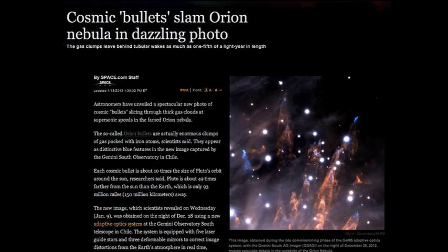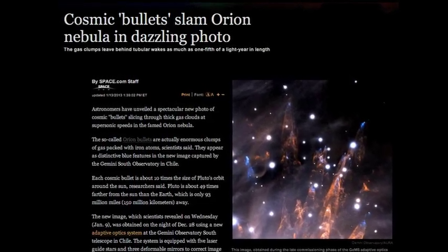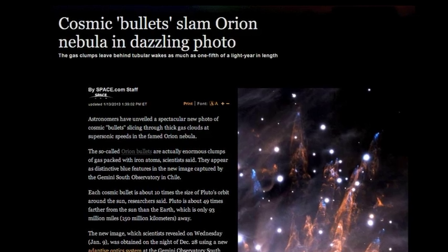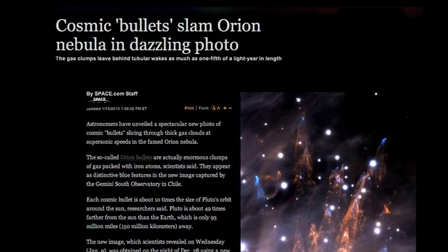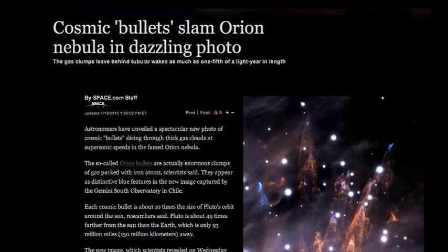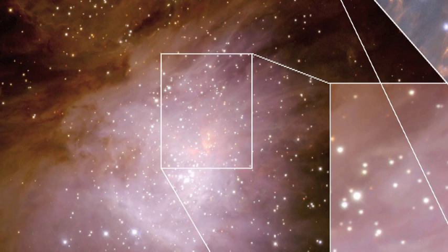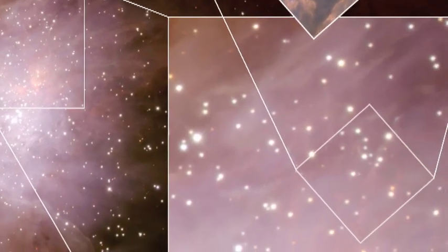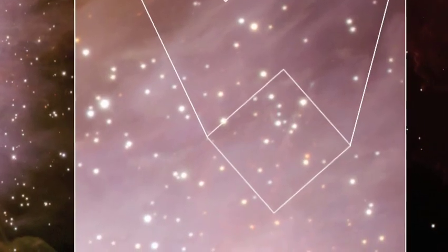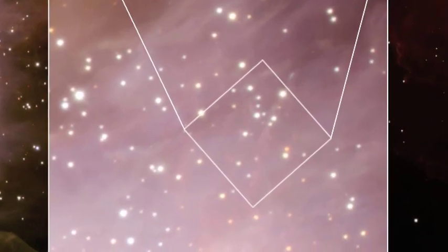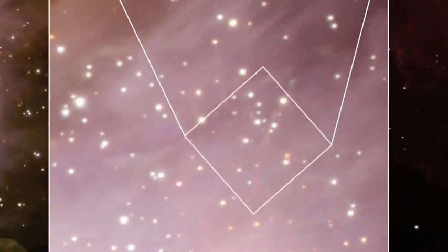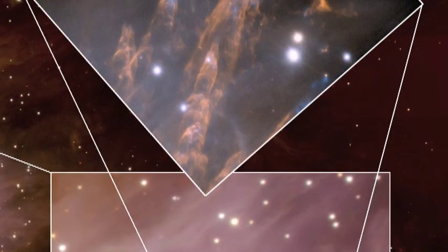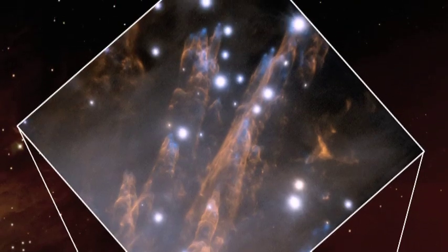A new space image reveals in astonishing detail so-called bullets of gas ejected from the Orion Nebula. The Orion bullets, which astronomers describe as clumps of gas packed with iron, are said to be 10 times the size of Pluto's orbit around the Sun. The astronomers envision strong winds propelling the bullets to supersonic speeds. But is this description appropriate for this kind of phenomenon in space?